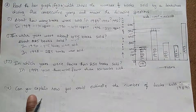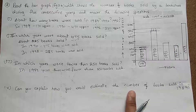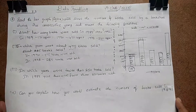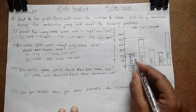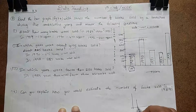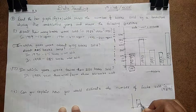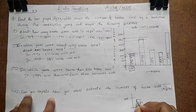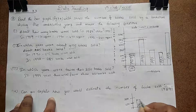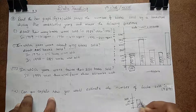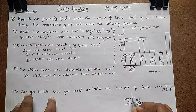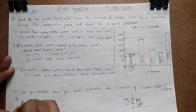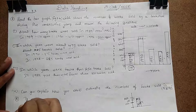Next, the last question: can you explain how you would estimate the number of books sold in 1989? How we are estimating is the matter for this question. We are estimating like this — zooming in on the 1989 bar graph: this was the 200 line and this was the 100 line; in between is the 150 line. The bar is just above 150 and just below 200, so we estimate approximately 170 books.